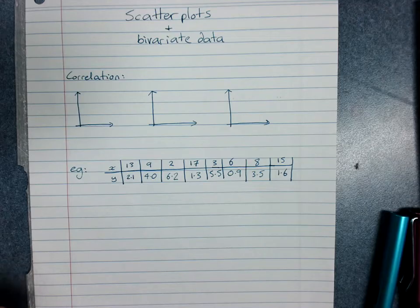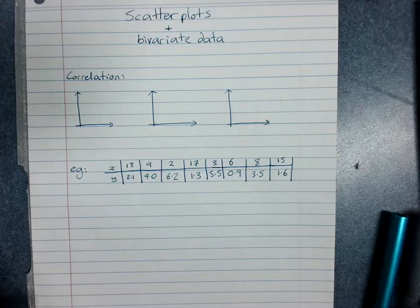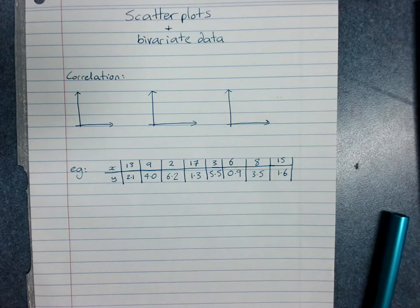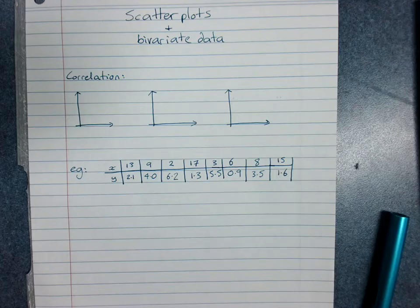To display bivariate data, we usually display it on a scatter plot, and it lets us see if there's a connection between the two variables.